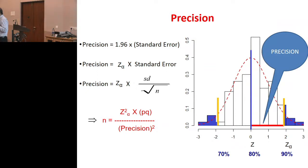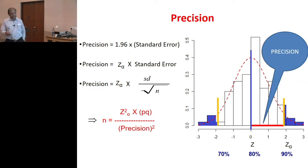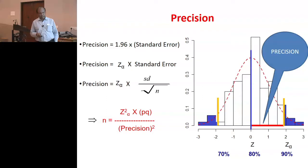When you say it could vary from 70 to 90%, the precision is only half of that difference — please remember this, it is very important. Precision is only this one side: two standard errors. Two standard errors away is the higher limit; two standard errors away on the other side is the lower limit.